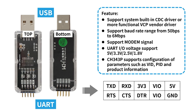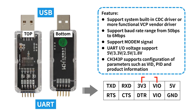If you want the high level on the serial port line to be 3.3V, use a jumper to short VIO and 3V3. If you want the high level on the serial port line to be 5V, use a jumper to short VIO and 5V. The CH343P also supports configuration of parameters such as VID, PID, and product information.